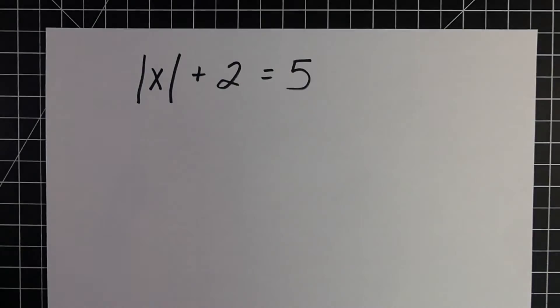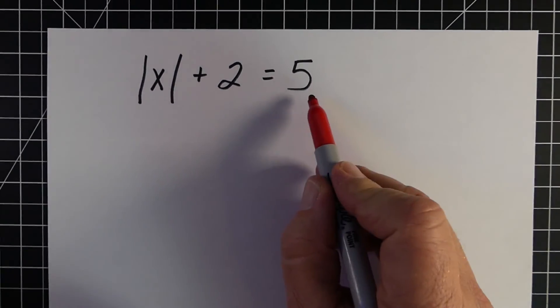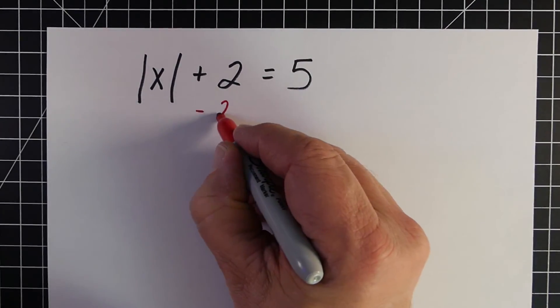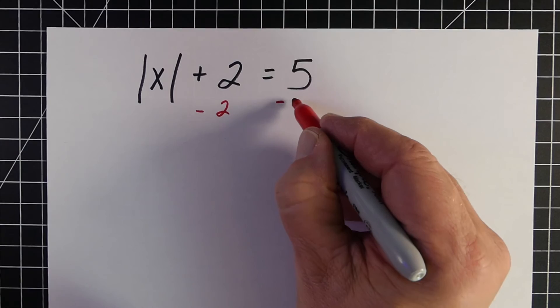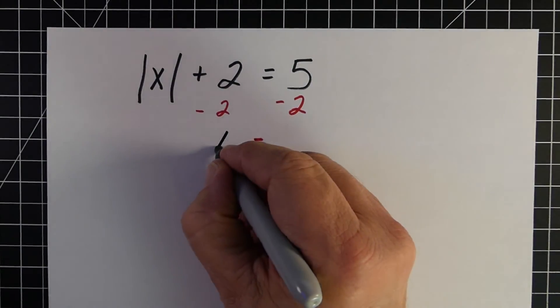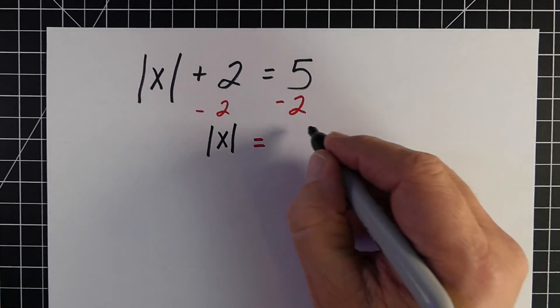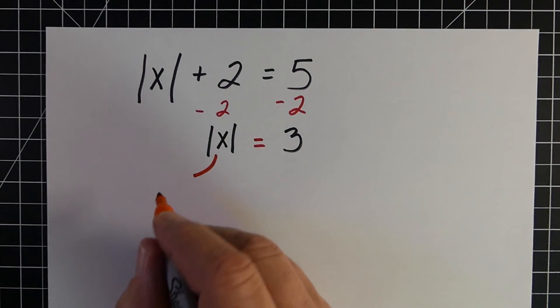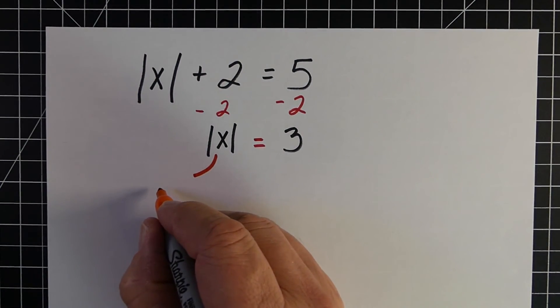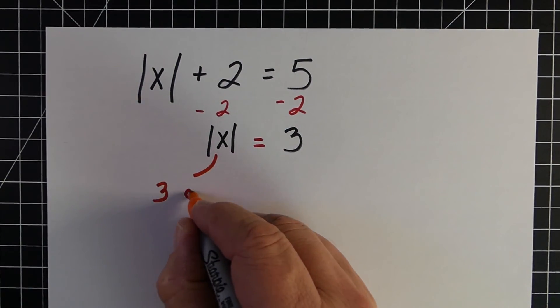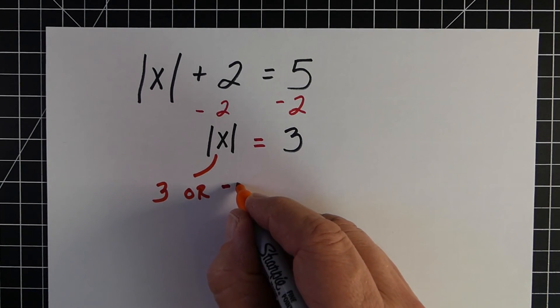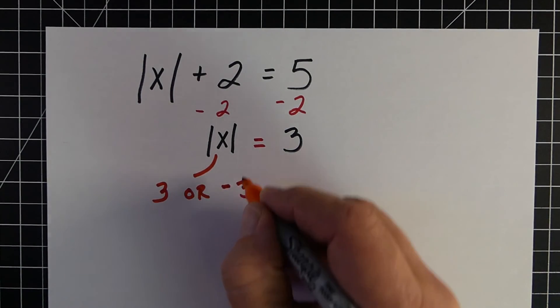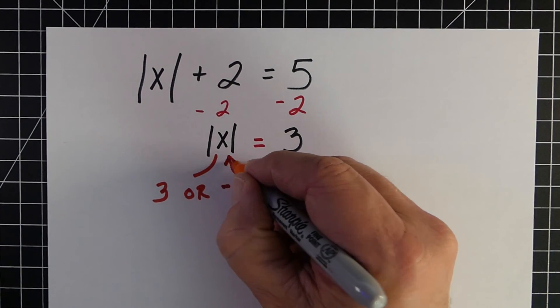Our last example is solving an equation where the absolute value might be part of it. In this example: the absolute value of x plus 2 equals 5. We solve this by subtracting 2 from both sides, which gives us the absolute value of x is equal to 3. As we looked at earlier in the video, there are actually two answers it could be — it could be a positive 3 or it could be a negative 3.